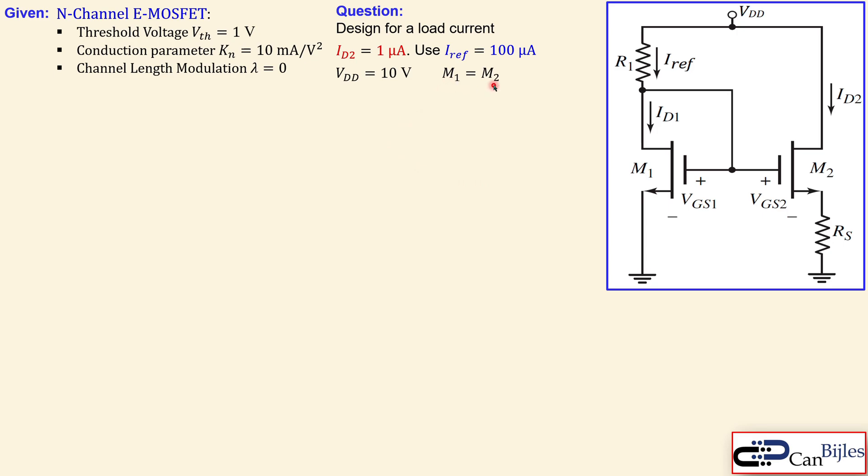They are matched, so M1 is equal to M2. That means they have the same physical dimensions and also they have the threshold voltage which is exactly the same, one volt. Conduction parameter Kn is 10 milliamps per square volt.